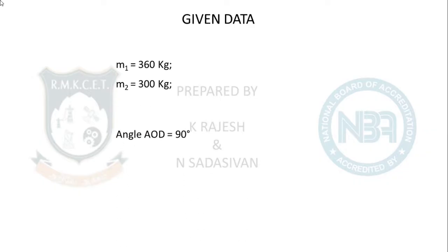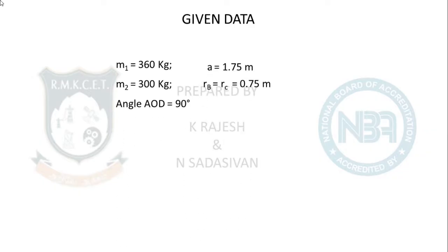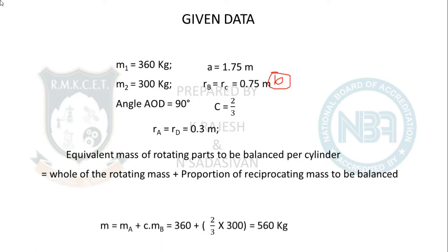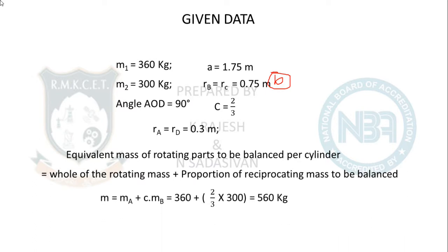That is your small b, because A and D are the engines and inside is the wheel. Two-thirds of the mass is your small b — the balancing mass. Engine crank radius is 0.3 m. The equivalent mass of rotating parts to be balanced equals the entire rotating mass plus C times the reciprocating mass: M1 + C×M2 = 360 + (2/3)×300 = 560 kg equivalent mass to be balanced per wheel.